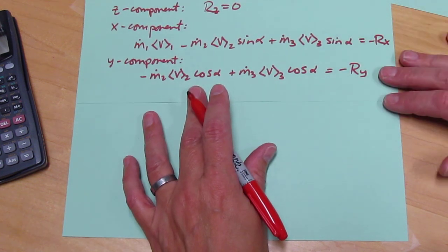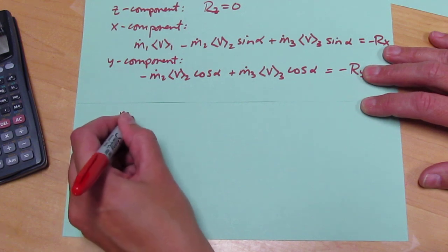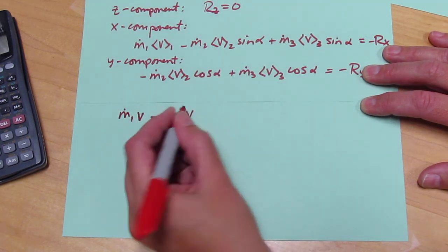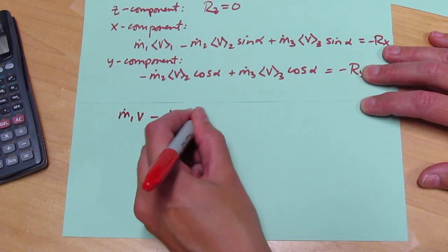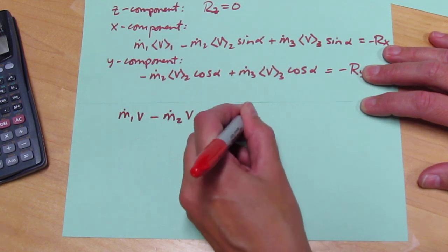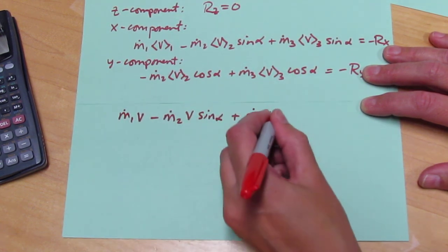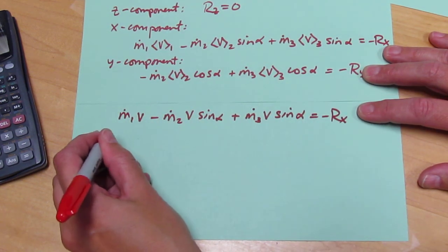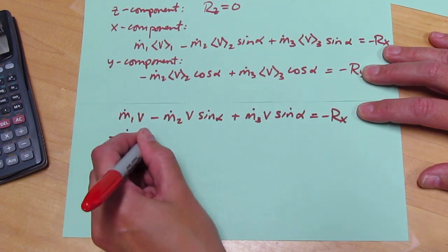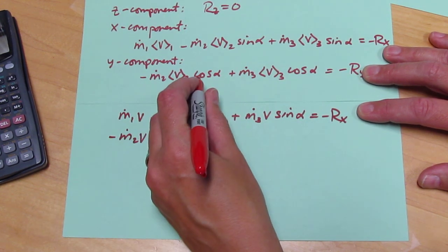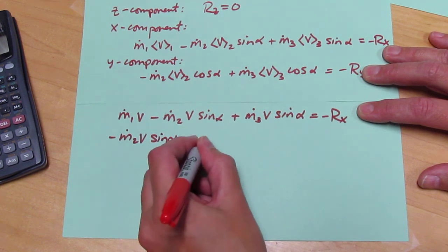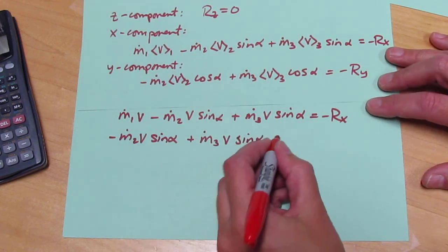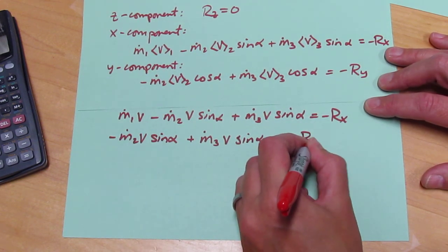So, beginning with the momentum balance, we have M1V minus M2V times sine alpha plus M3V sine alpha equals minus Rx, and minus M2V, I'm going to call this sine of alpha, because sine and cosine are equal, plus M3V sine of alpha, just reducing the number of variables I have to rewrite, equals minus Ry.